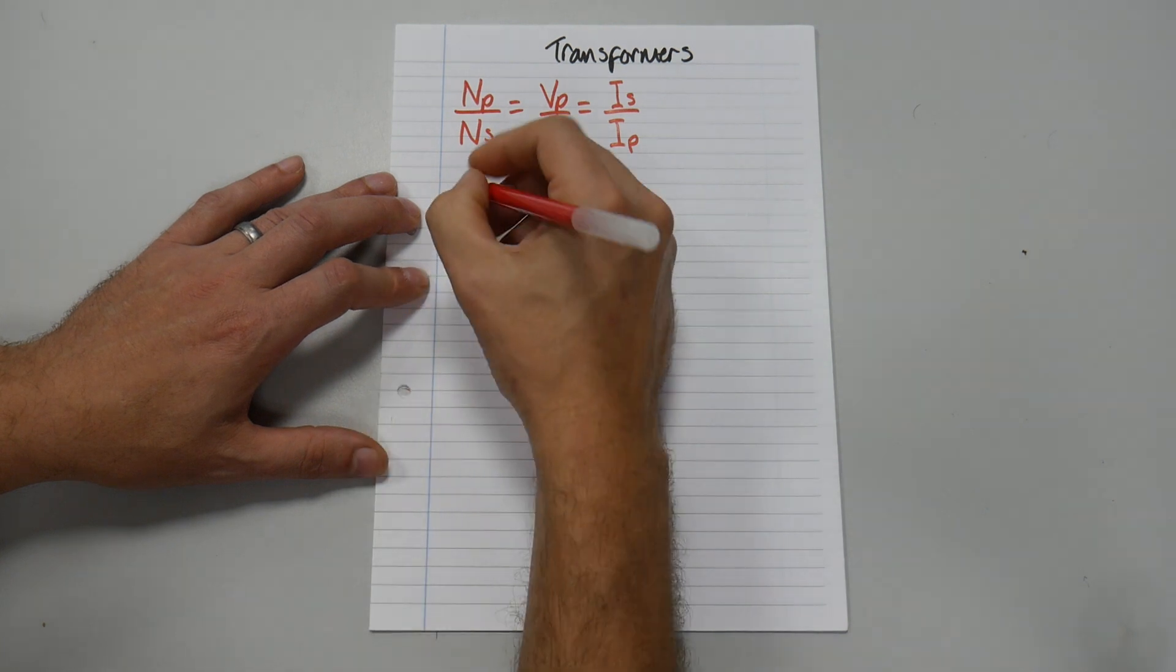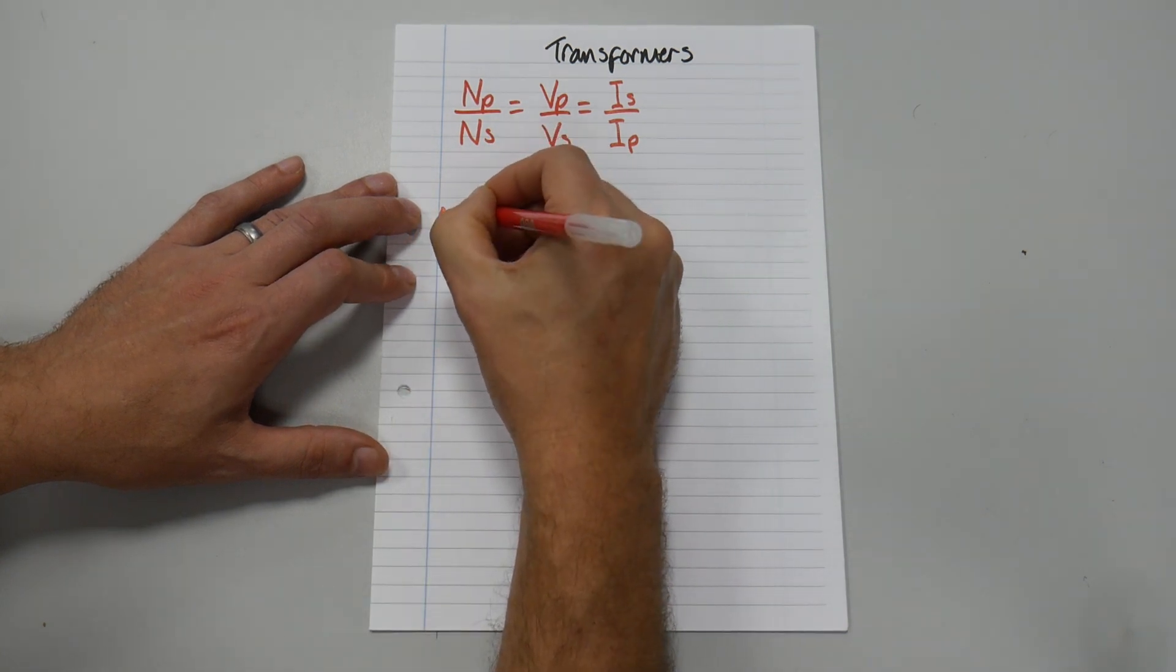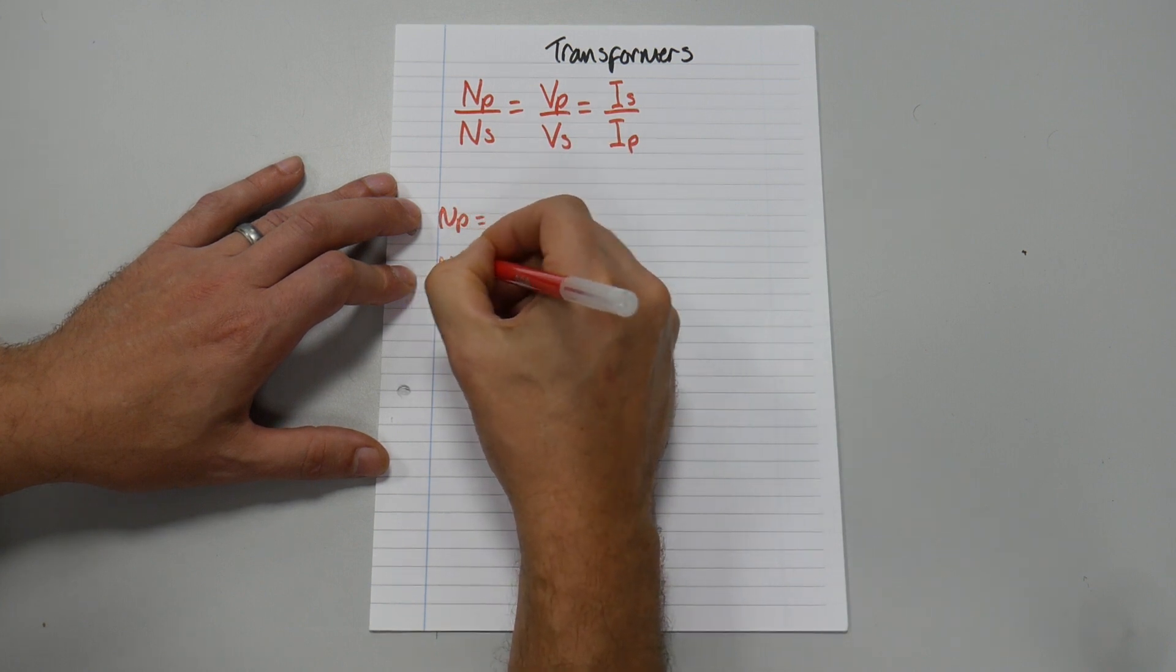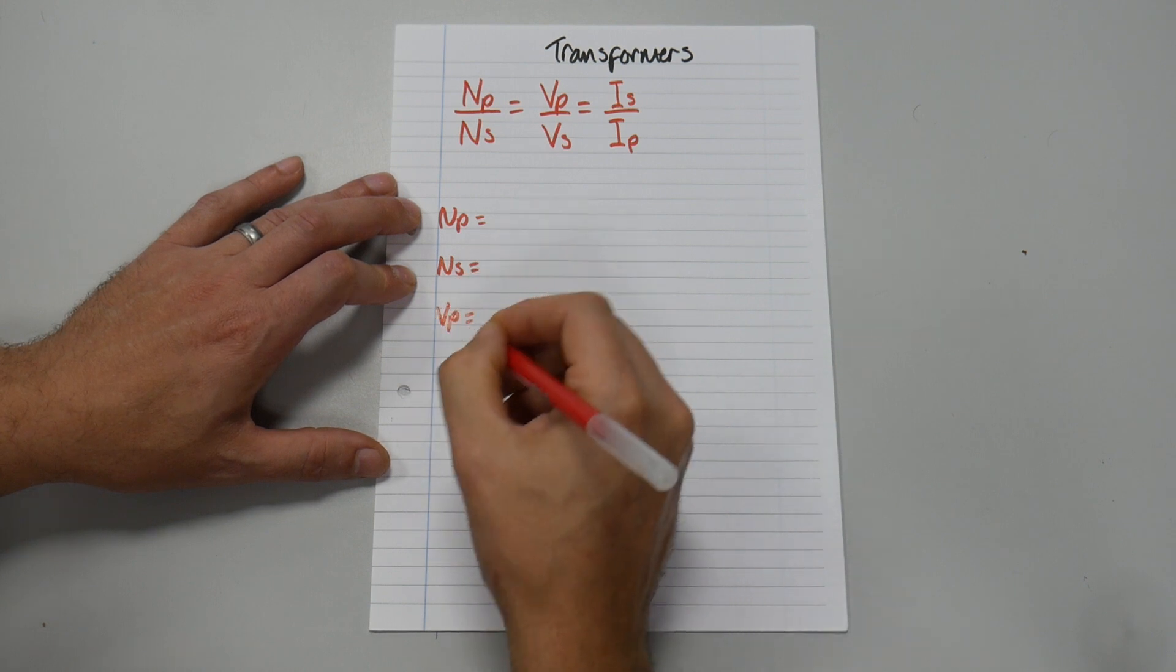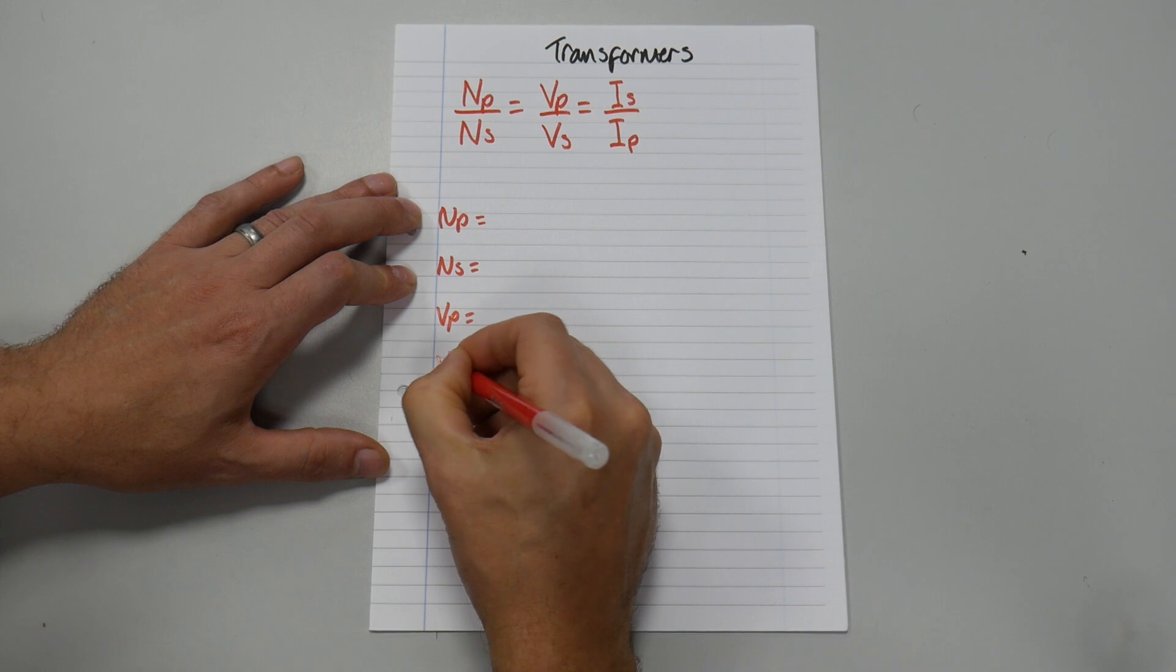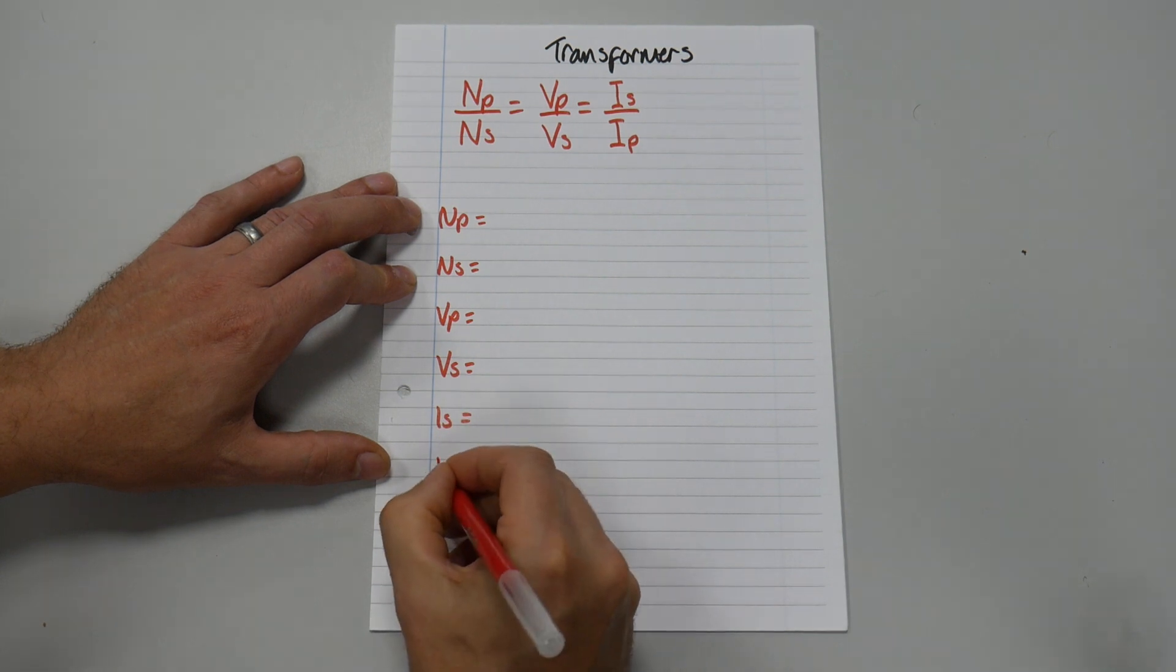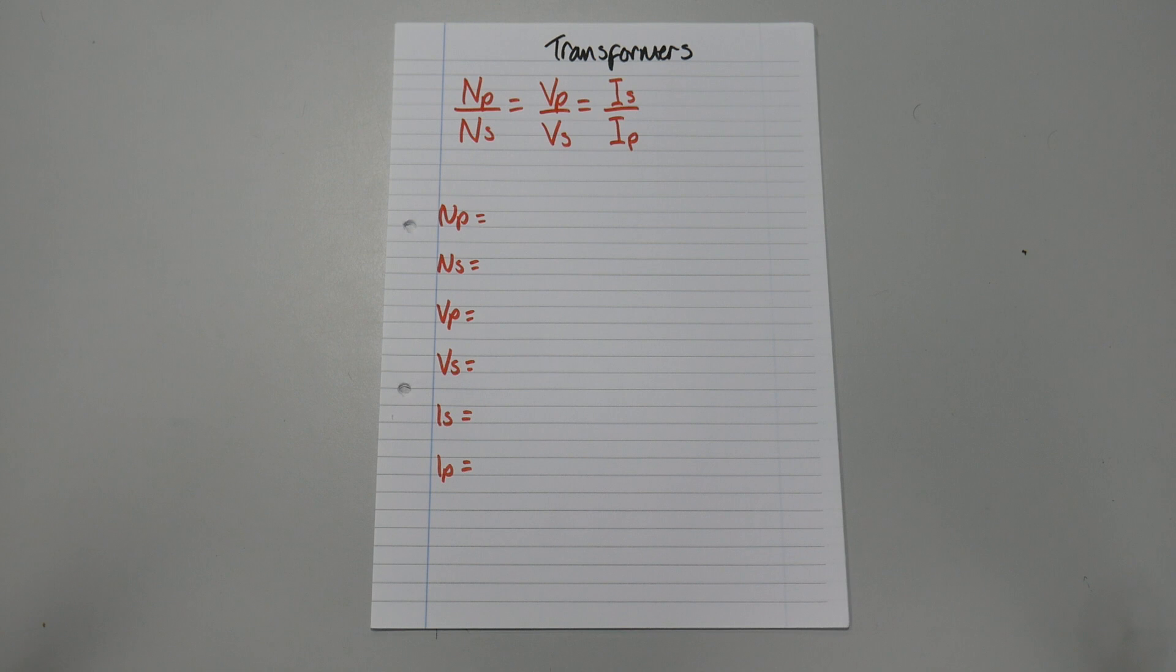And we'll write down each of our symbols. So we have NP equals, NS equals, then VP equals, VS equals, then IS equals, and IP equals. I'll change my color pen.